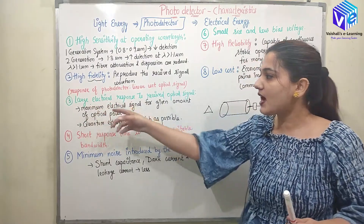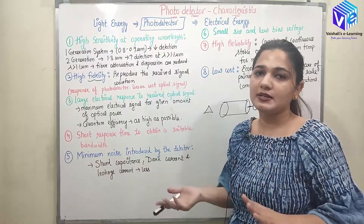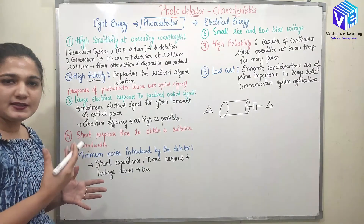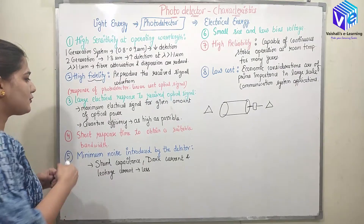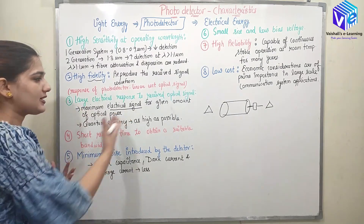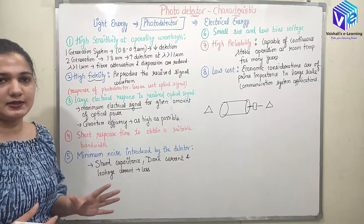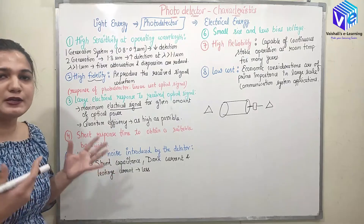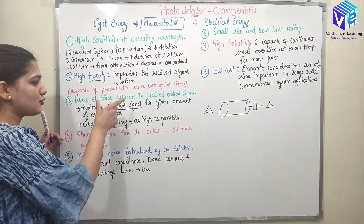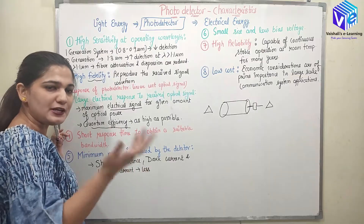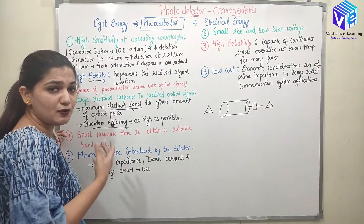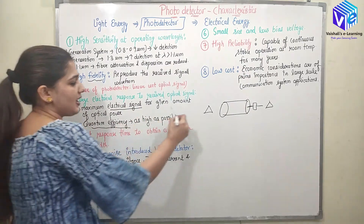The next characteristic is a large electrical response to the received optical signal. The photodetector should give a very good electrical signal output — the maximum electrical signal for a given optical signal — and no part of the information must be lost. After that, quantum efficiency should be as high as possible. The electrical signal output per unit optical signal input gives us the efficiency, and since we are finding the efficiency of the photon, it is termed quantum efficiency. It should be as high as possible.